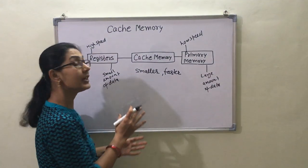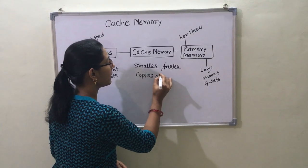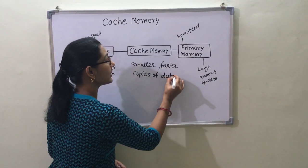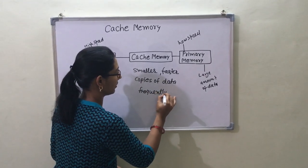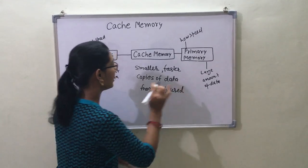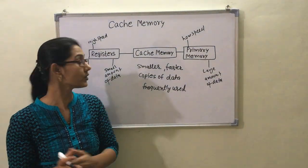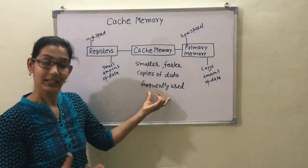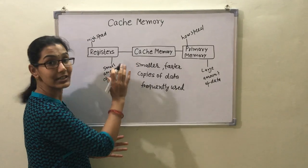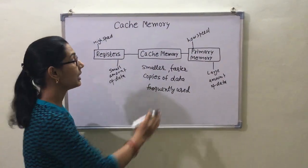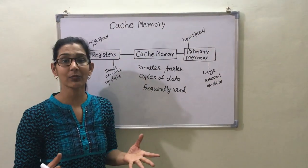Cache memory is mainly used for storing copies of data which is frequently used, for improving the performance of the system. Cache memory compensates for the speed differences between registers and primary memory.